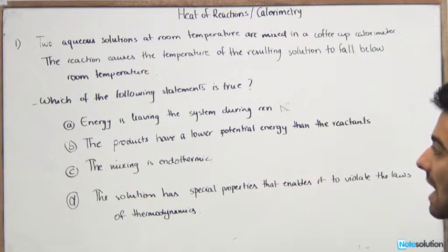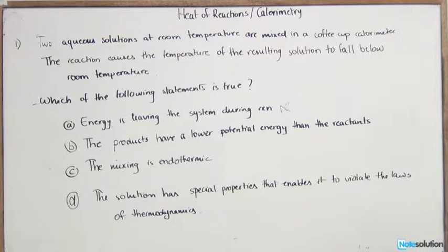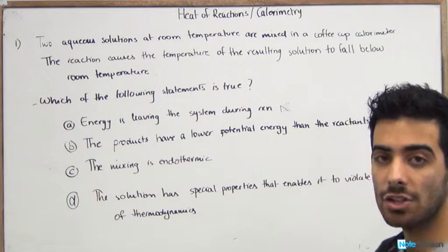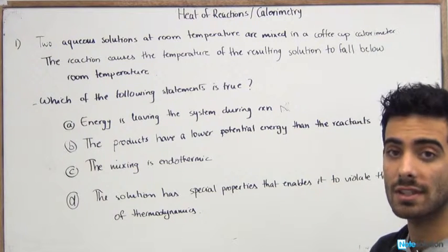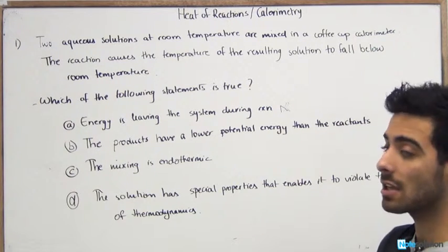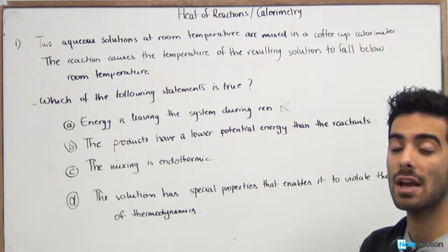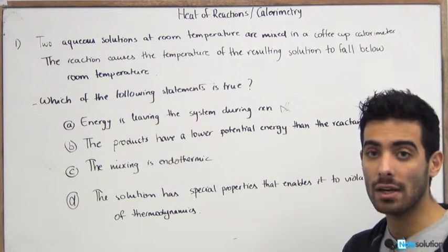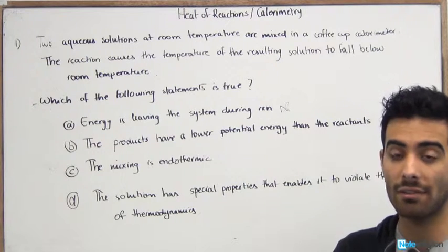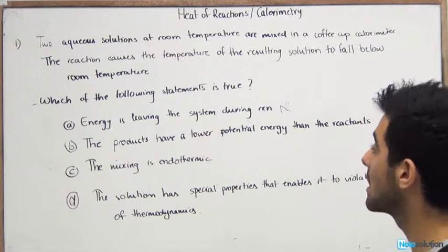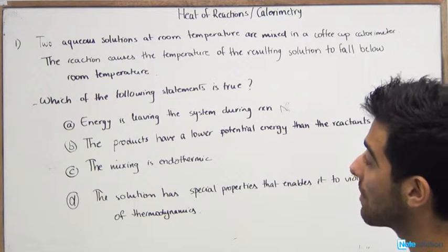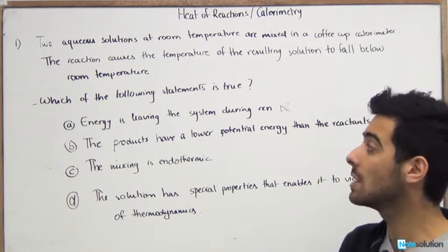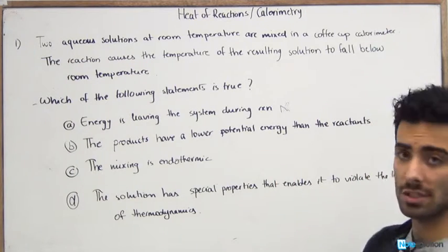The products have a lower potential energy than the reactants. So potential energy is an energy that you have in yourself. It's stored inside you. So when we say that a product has higher potential energy than the reactants, this means they require energy in order to have this energy stored in them. Now in this case, the products have a lower potential energy than the reactants. So lower potential energy, if you remember the graph showing exothermic and endothermic reactions.